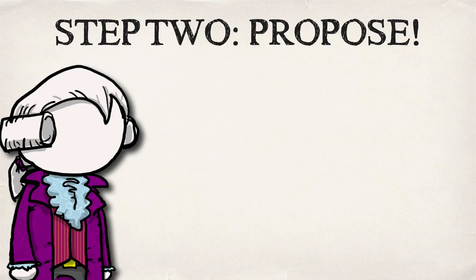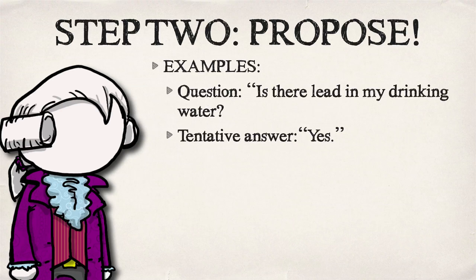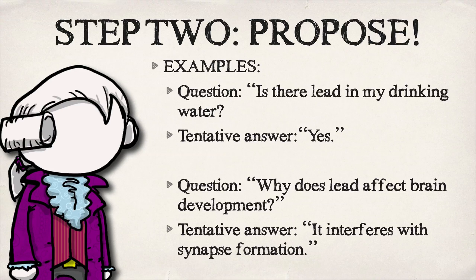Based on your question, you can come up with a testable answer. So if our question is, is there any lead in my drinking water? Your testable answer could be yes — yes, I think there is. Or if your question was, why does lead affect brain development? You could have a testable answer that it interferes with the growth of synapses.